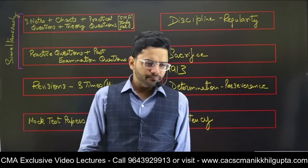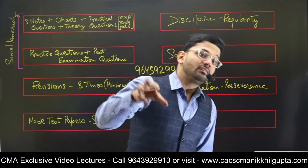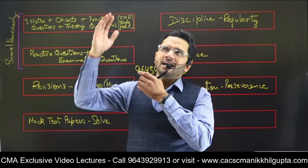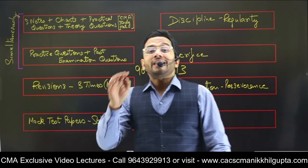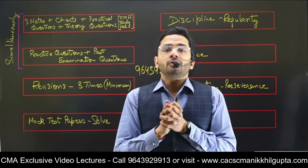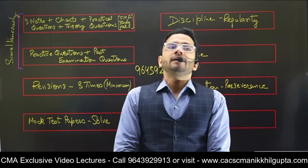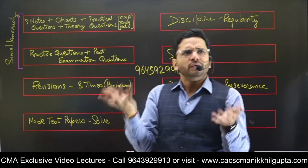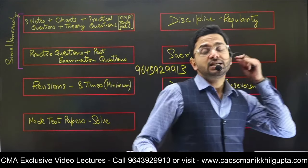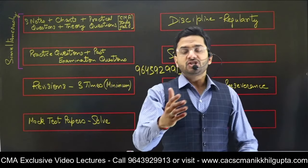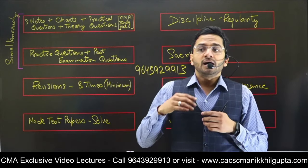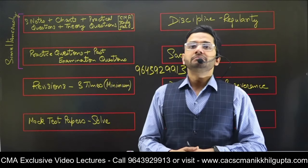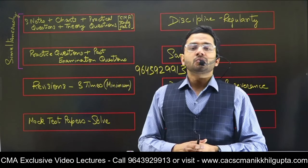Even within chapters, there's an ABC analysis. For example, salary chapter is an A category chapter, but within it, retirement benefits — which includes gratuity, provident fund, leave encashment, etc. — is relatively less important from an exam standpoint because a question from retirement benefits seldom comes in the exam. The scanner is your source to know which topics within a chapter are important, based on how many practical questions have been asked from each topic in the past.